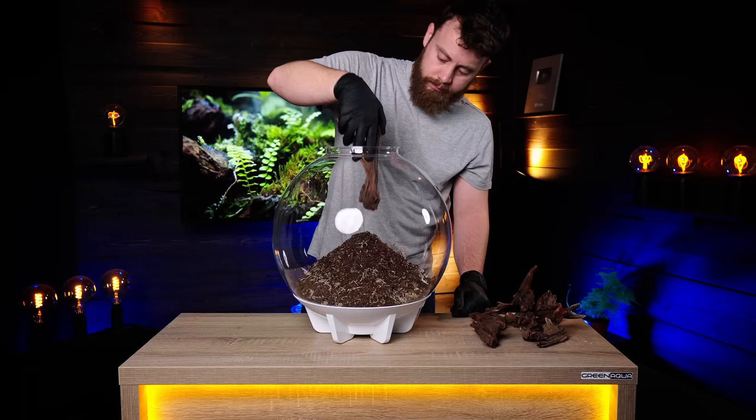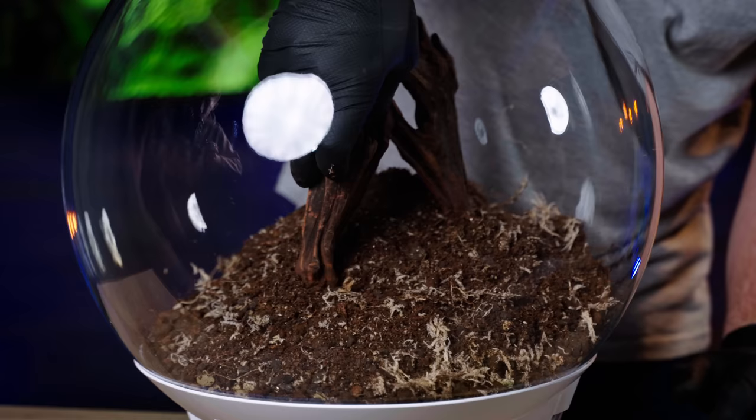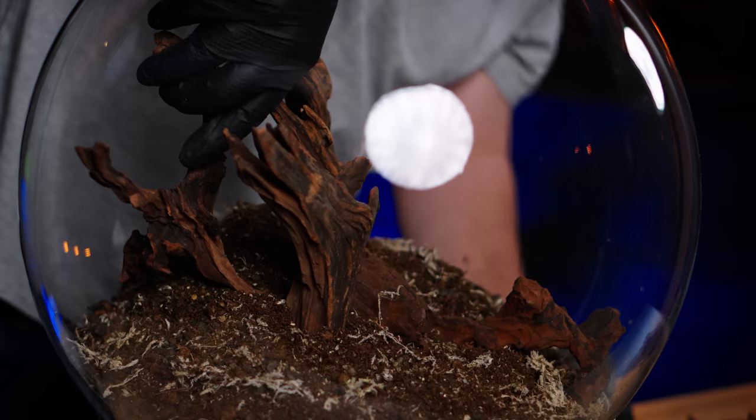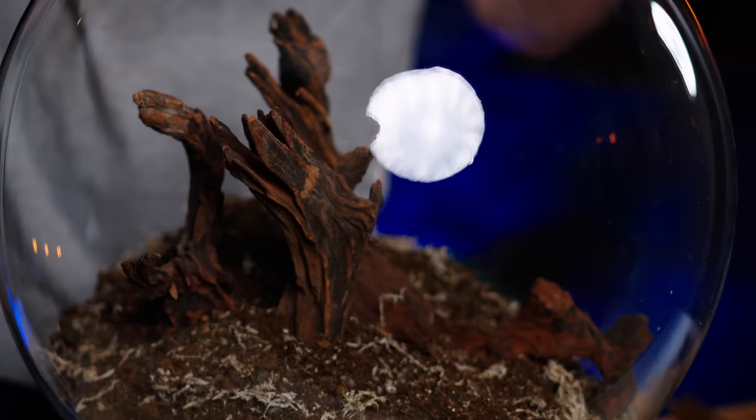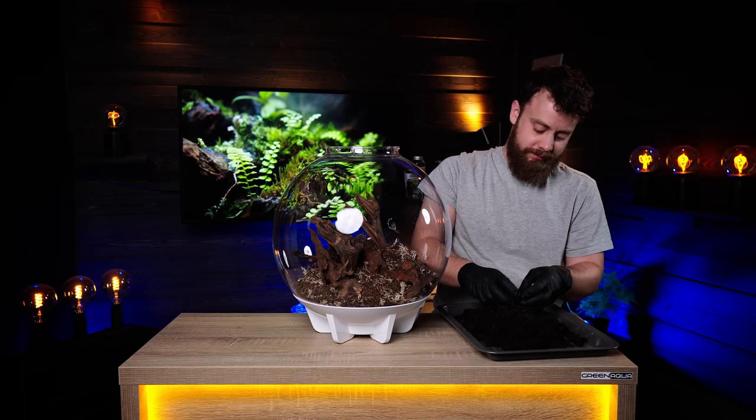He selected some smaller ironwood pieces that would fit through the top opening of the Biorb Air 30. He's just pushing these ironwood pieces into the soil. The black peat that he will use later will stabilize the soil structure. The general scaping rules are applicable here as well. We prefer to use an odd number and take care to have different heights with the different wood pieces. And the hardscape is done.